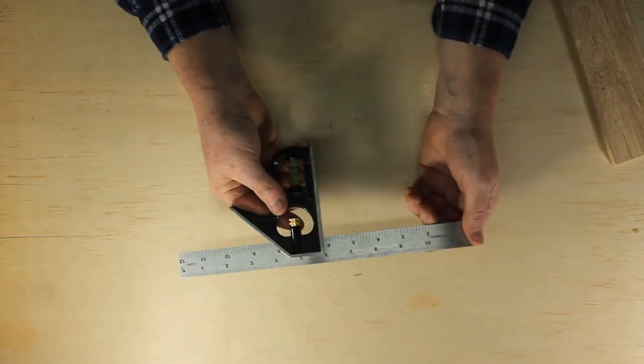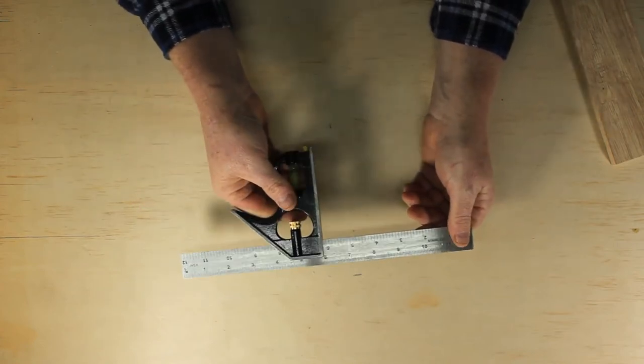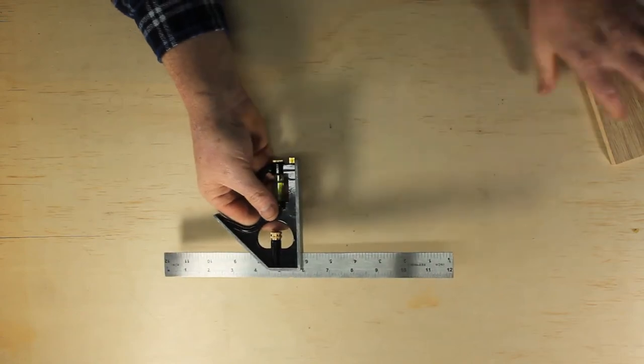If the square is new to you it's important to check that it really does measure an accurate 90 degrees. Here's how to do that.